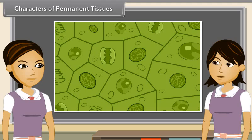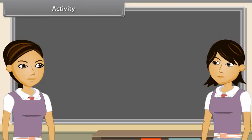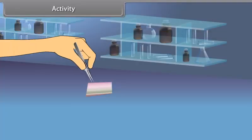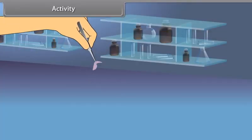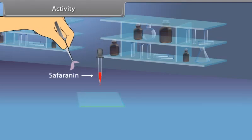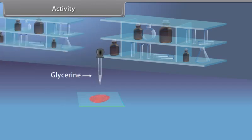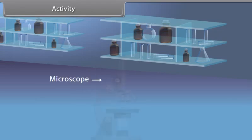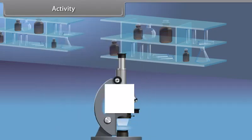After some duration, meristematic tissues lose their ability to divide and take up a specific role to form a permanent tissue. This process is called differentiation. Differentiated meristematic tissues form different types of permanent tissues. In permanent tissues, cells are thin or thick-walled, living or dead and mature. Their shape may be oval, rounded, polygonal or elongated and fibre-like. They have intercellular spaces and vacuolated cytoplasm. Because they have lost the power of division, they do not help in growth.